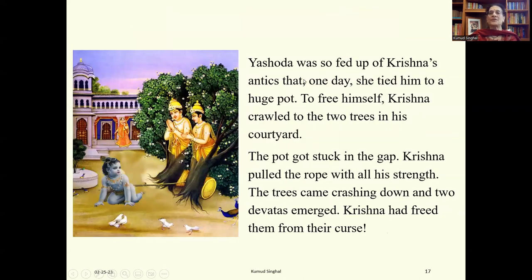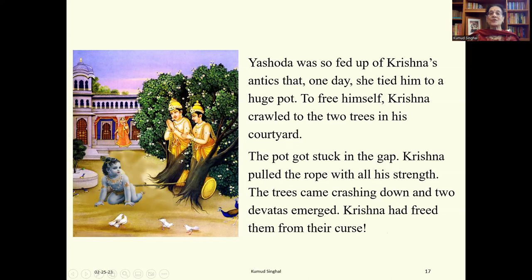Yashoda was so fed up of Krishna's antics that one day she tied him to a huge pot. To free himself, Krishna crawled to the two trees in his courtyard, pulling the pot. The pot got stuck in the gap between the trees. Krishna pulled the rope with all his strength, the trees came crashing down and uprooted. Two devatas appeared — these trees were actually two devatas who had been cursed to be trees, and Krishna had freed them from their curse.